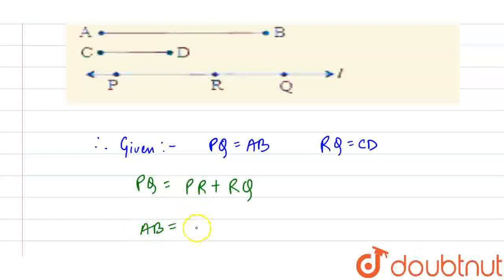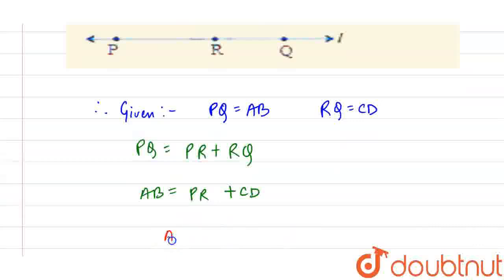That is equal to PR plus RQ. RQ की value किसके equal है CD के equal है, so AB equals PR plus CD. अगर हम CD को इस side ले जाएंगे, we get AB minus CD equal to PR.